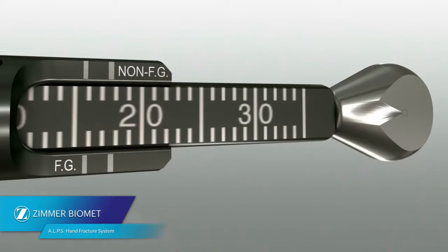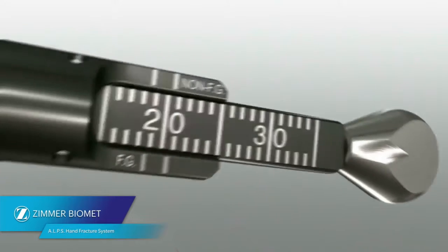For your convenience, the bone depth gauge has two measurement systems on the same side, depending on whether the tool was used through a fast guide or after the fast guide has been removed.